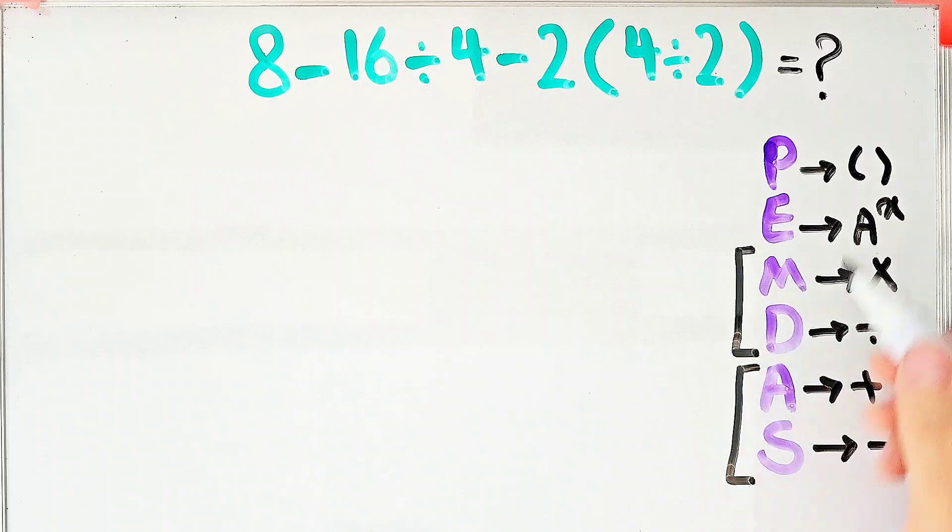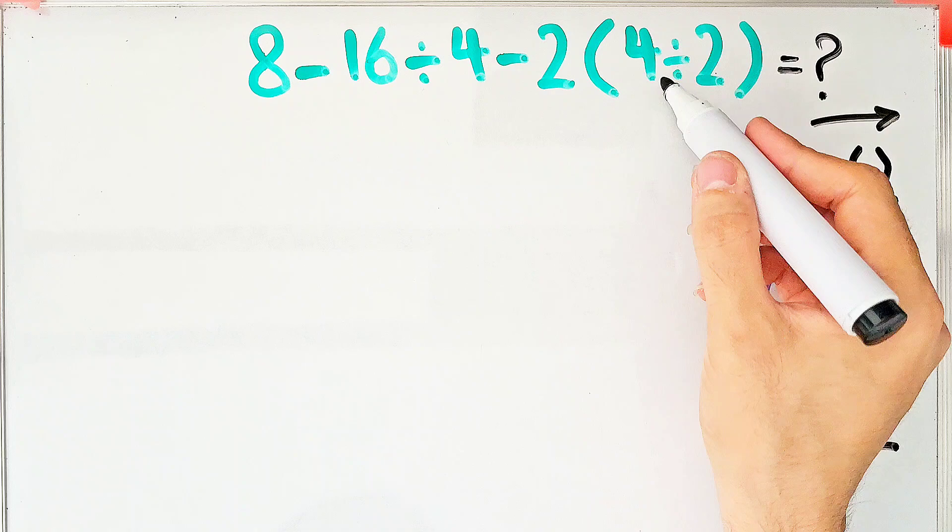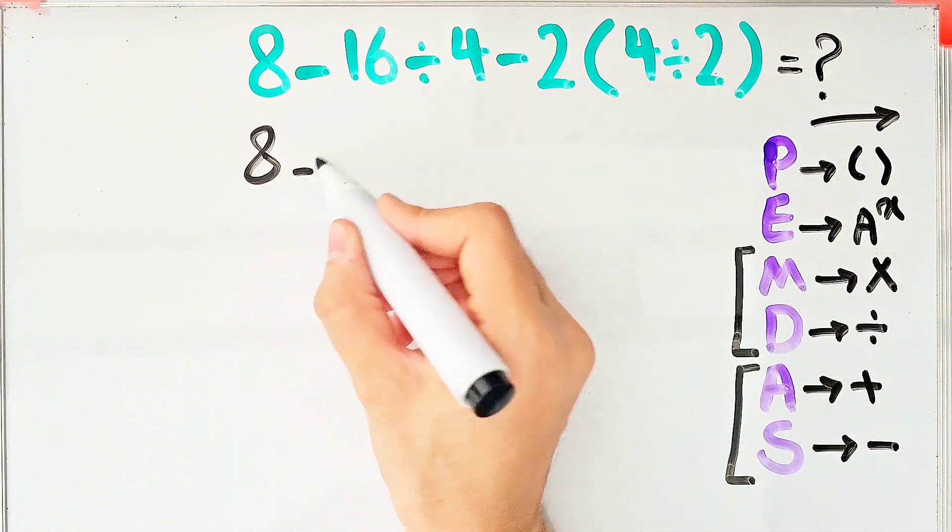When we have both in an expression, we start from the left and simplify the question. According to the PEMDAS rule, first we simplify the parentheses.